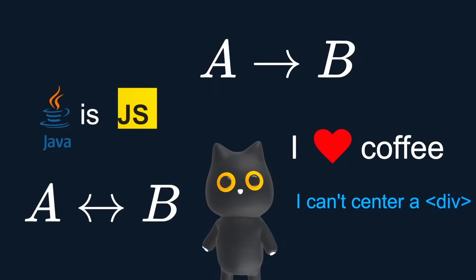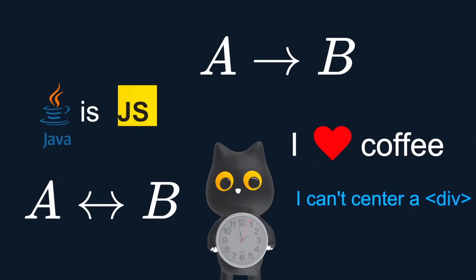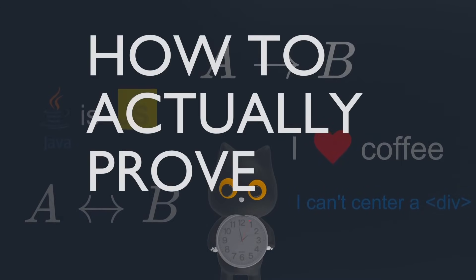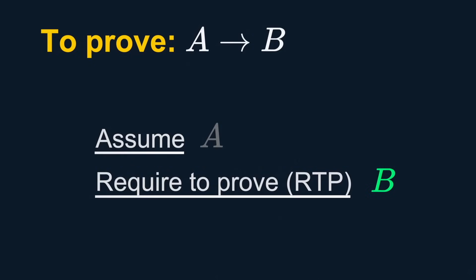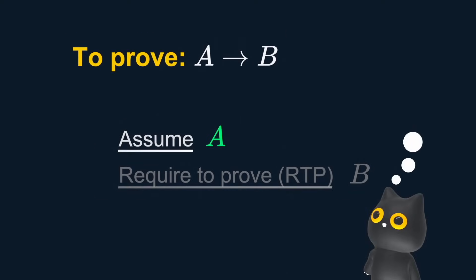All that talk about mathematical statements is fun, but I think it's time to talk about how to actually prove them. The structure is simple. We have some assumptions and something we require to prove. Some statements, however, are by default true and don't require proofs. These are called axioms. All proofs start with these axiomatic assumptions.